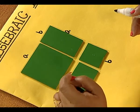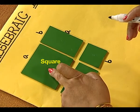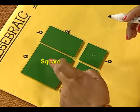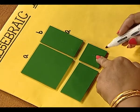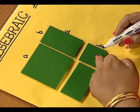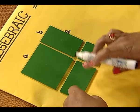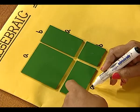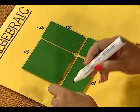So, the area of this square cutout is going to be a square units and the area of this square cutout is going to be b square units and the area of these two rectangular cutouts is going to be 2ab.